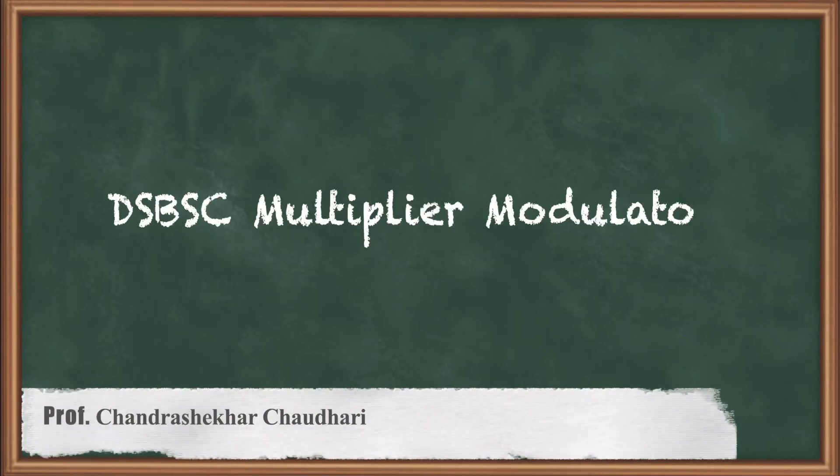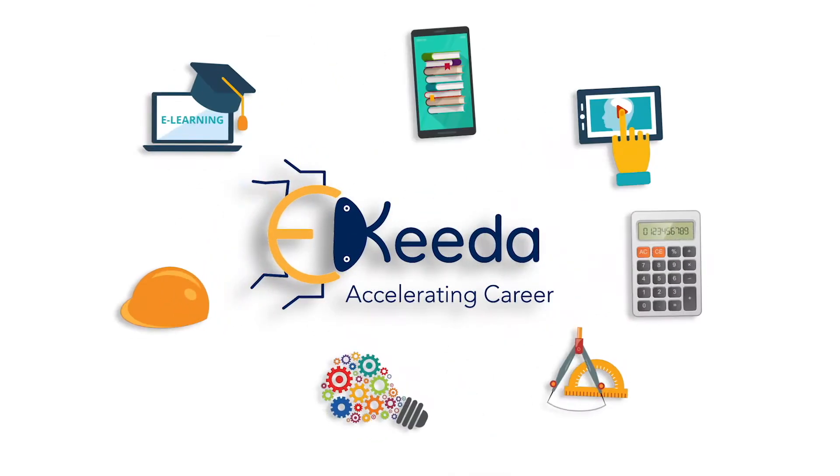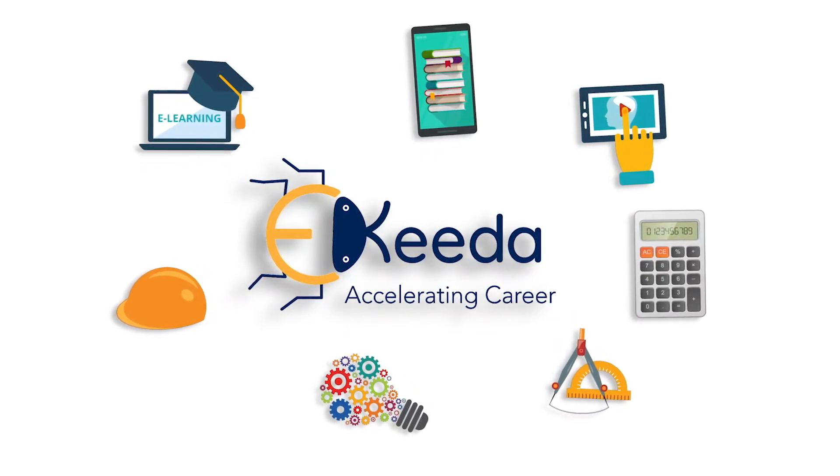Hello friends, let us see the double sideband with suppressed carrier multiplier modulator, DSBSC multiplier modulator. So here, double sideband with suppressed carrier.